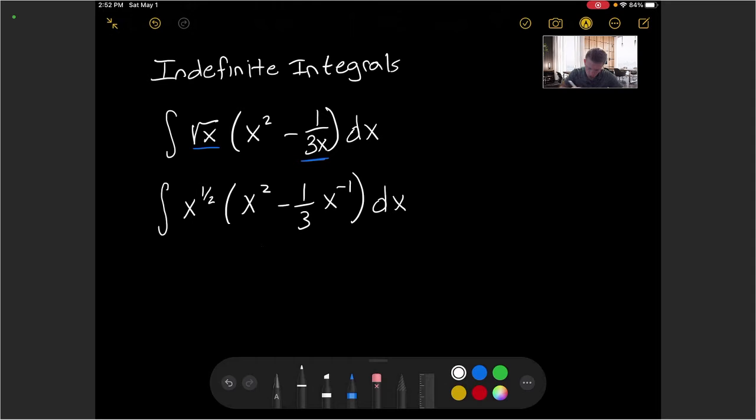Now, I can consider there's really two functions here multiplied together, my x to the 1 half and everything in the parentheses. I can go and distribute this and get two terms back that have powers of x. So let's rewrite the integral one more time.